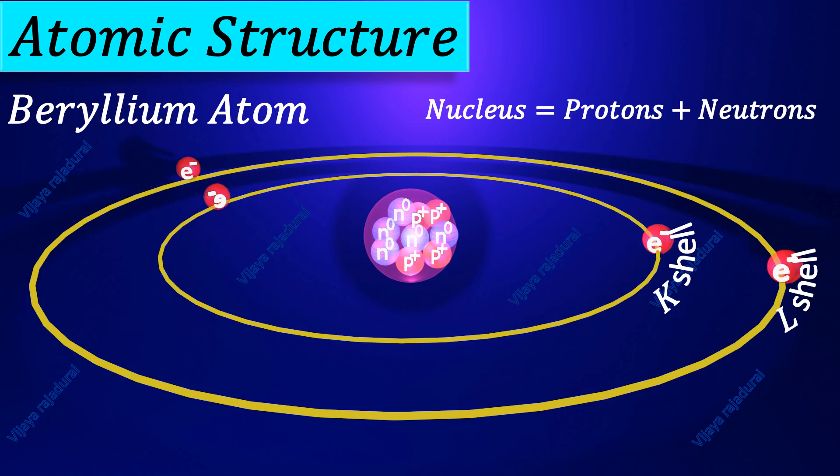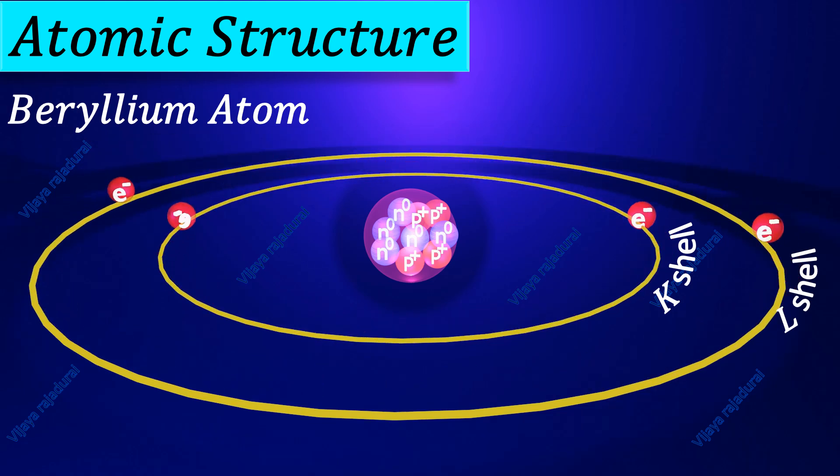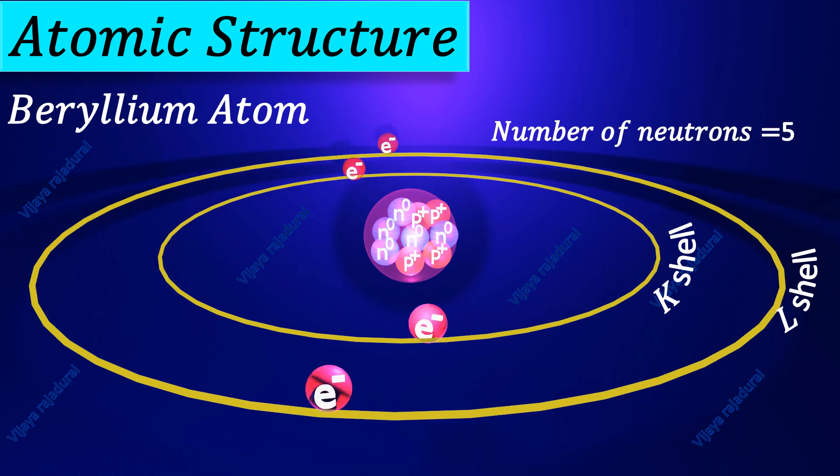Number of protons is always equal to number of electrons. So, in this atom, 4 protons and 5 neutrons are present.